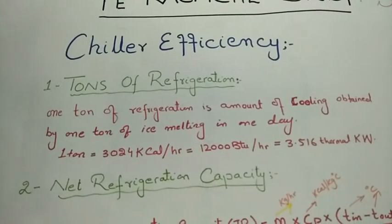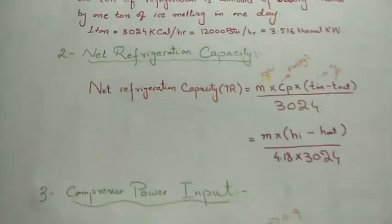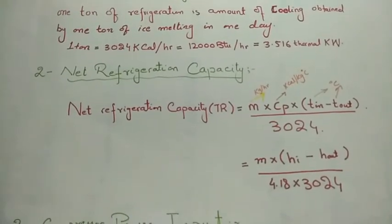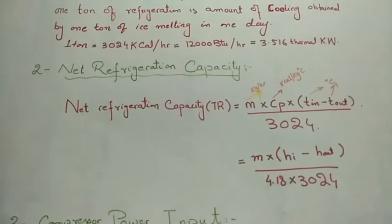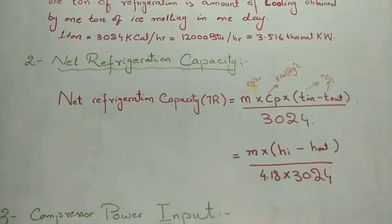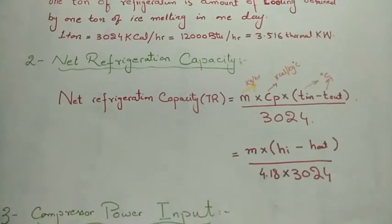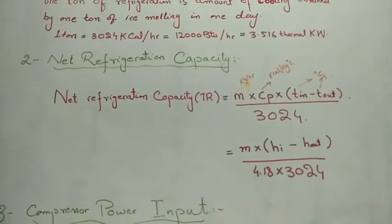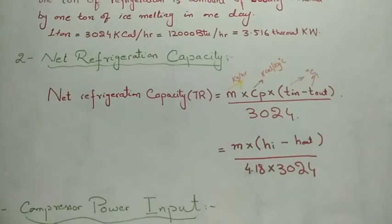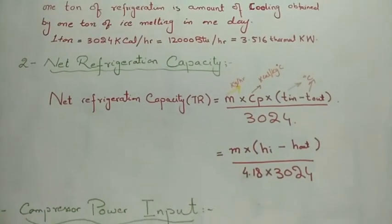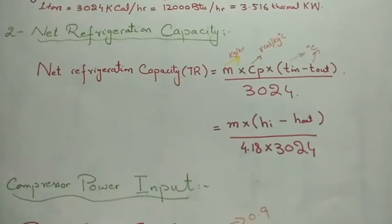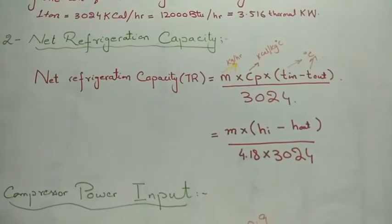One ton is also equal to 3.516 kilowatts (thermal). The second important term is net refrigeration capacity, measured in tons of refrigeration. It is the product of mass flow rate through the chiller multiplied by specific heat of water or refrigerant, multiplied by the temperature difference, divided by 3024. Alternatively, it can be calculated as mass flow rate multiplied by enthalpy difference, divided by 4.18 multiplied by 3024.